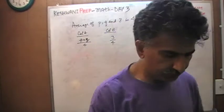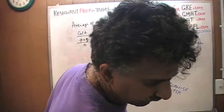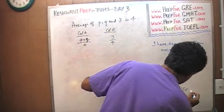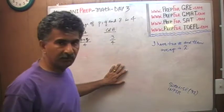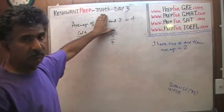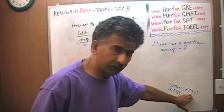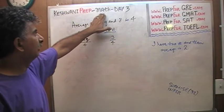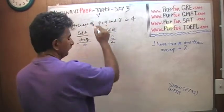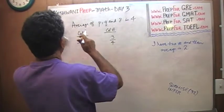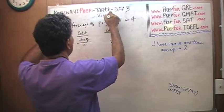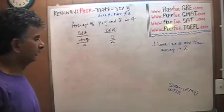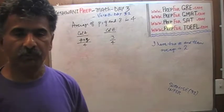Surmise is the word. If you do not know what surmise means, it does not hurt at the same time to improve our vocabulary. If you want to improve your vocabulary, simply type in Keshwani prep dash vocab dash day 31 and you will learn this word surmise is inferred. So what do you gather from it? What do you surmise from it? What do you infer from it? If I tell you that I have two numbers and their average is two.